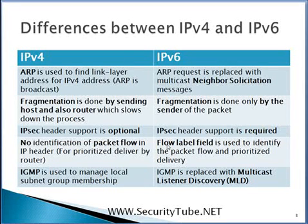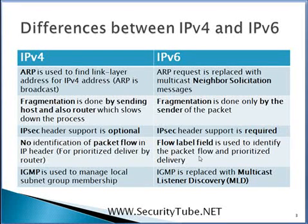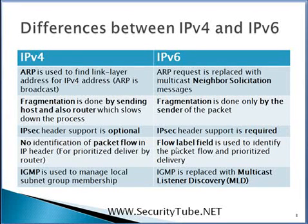In IPv4 there is no identification of packet flow in the IP header, but in IPv6 a flow label field is introduced in the IPv6 header itself so that routers can identify packet flow and prioritize delivery. If a host wants to transfer a group of packets to a destination and wants all packets treated the same way by intermediate routers, it can add the flow label field. All packets with the same flow label and same source address will be treated the same way by all routers.